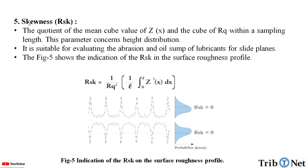The next factor is skewness, which is represented by RSK. The quotient of the mean cube value of Z of x and the cube of Rq within a sampling length. And this parameter concerns height distribution. It is suitable for evaluating the abrasion and oil sump of lubricants for slide planes. The figure 5 shows the indication of RSK in the surface roughness profile.